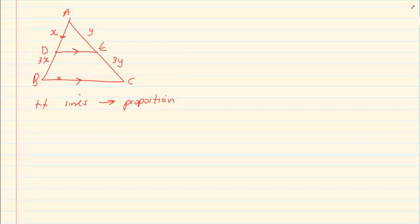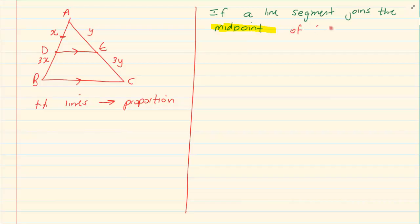This theorem says that if a line segment joins the midpoint of two sides. Now pay attention to the wording. If a line segment joins the midpoint. Midpoint means middle. So it joins the midpoint of two sides of a triangle.